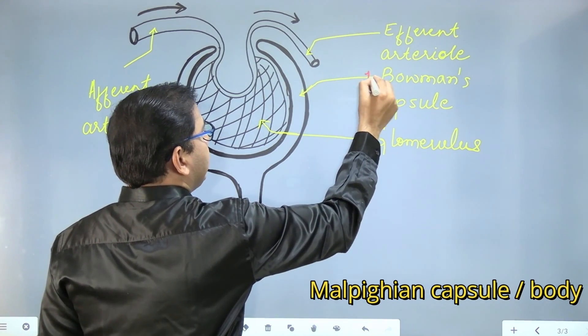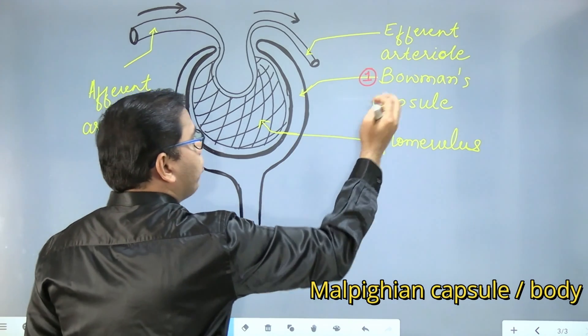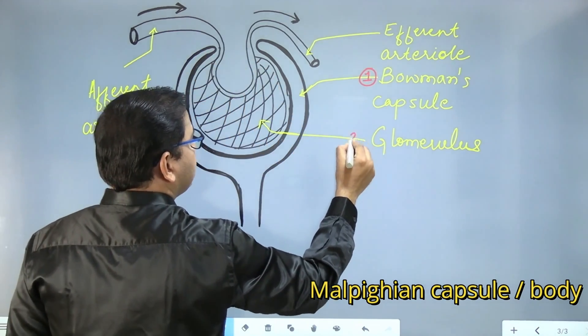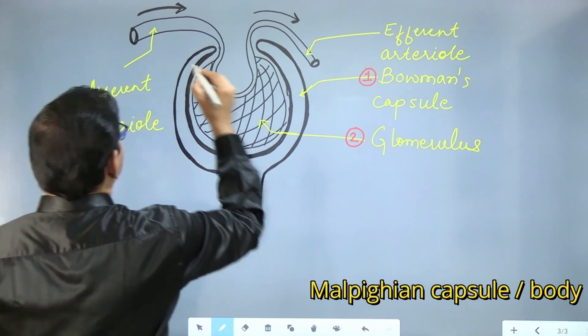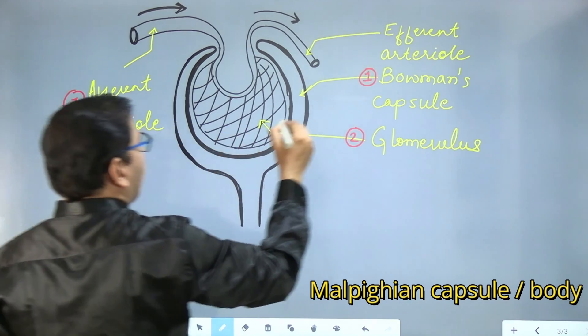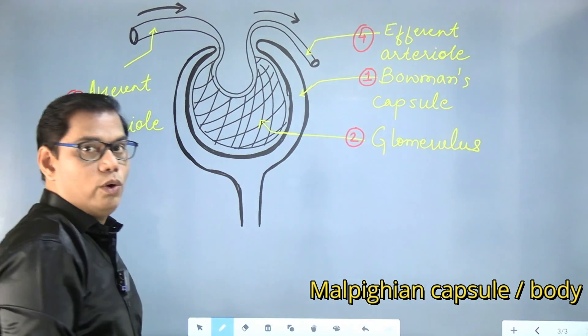First and the foremost important part of this Malpighian body is Bowman's capsule. Then this knot-like structure which is called a glomerulus. Then third part is afferent arteriole and fourth part is efferent arteriole.